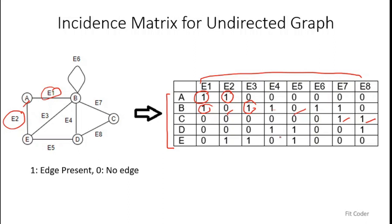Now, what if this is a weighted graph? For a weighted graph the concept remains the same — it's just that instead of 1 we fill the weight of the edge. If the weight of E1 is 2, then for A and B we fill 2. If the weight of E2 is 3, then for A and E we fill 3. So instead of 1 we write the weight of the edge.